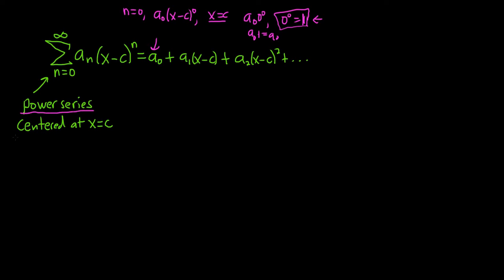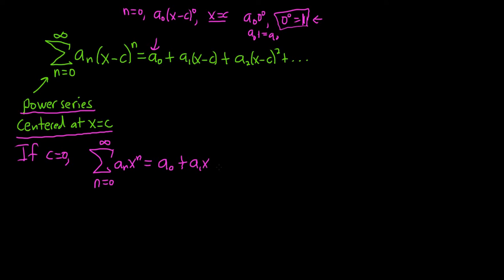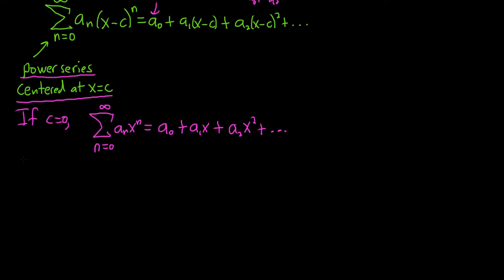Back to power series. This is a power series centered at x equals c. So if the center is zero, if c equals zero, we simply get the infinite sum as n runs from zero to infinity of a sub n times x to the n. You would get a sub zero plus a sub one x plus a sub two x squared plus et cetera. So this would be a power series centered at zero. There is a big theorem in mathematics called the convergence theorem for power series, and it's a really big deal. Let's go through it very carefully.